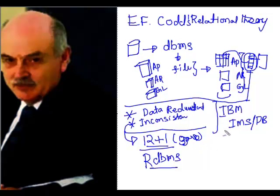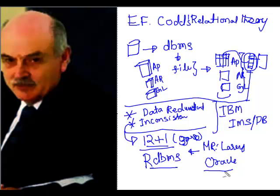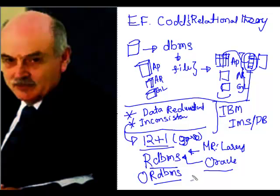IBM had just released their IMSDB product and did not create DB2 — the relational database management system — immediately. However, Mr. Larry Ellison, CEO of Oracle Corporation, saw the benefits of it and developed the first versions of Oracle. Initially it was not called Oracle, but later releases were. Oracle followed RDBMS principles, and from version 8i or 9i it also added object-oriented relational database management system principles, so currently Oracle is called an object-relational database management system.